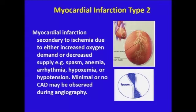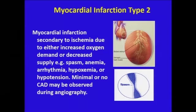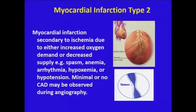In Type 2 MI, you don't have a ruptured plaque or an ulceration. Rather, you have either a marked increase in myocardial oxygen demand — for example, tachycardia or hypertension — or you have decreased supply — for example, spasm, anemia, arrhythmia, hypoxemia, or hypotension. The patients may or may not have coronary artery disease.